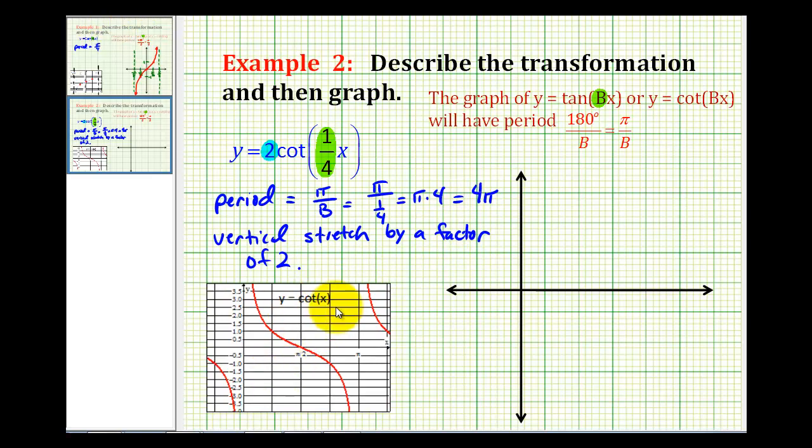Normally when we graph the cotangent function, we graph it on the interval from zero to pi radians, because that's the period of the function. And then we know it has a vertical asymptote at zero and pi radians.